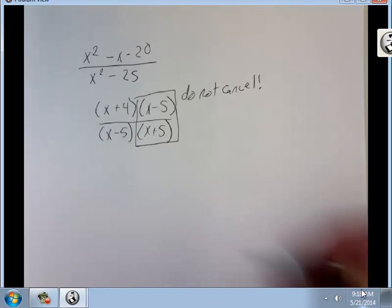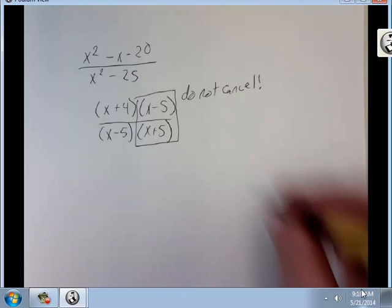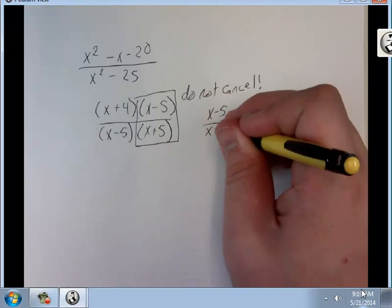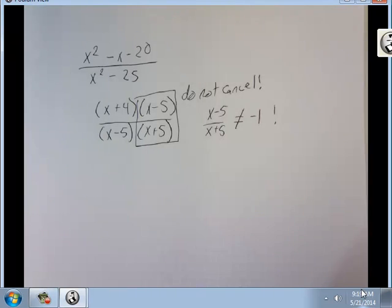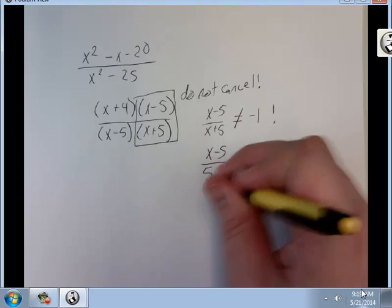Alright. I've seen a lot of people reduce that to negative 1. So x minus 5 over x plus 5 does not equal negative 1. The only way that these would reduce is if you had x minus 5 over 5 minus x. This equals negative 1.